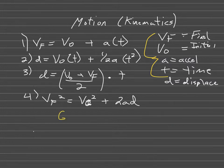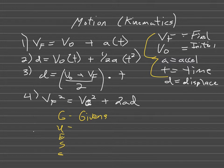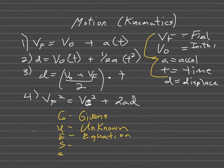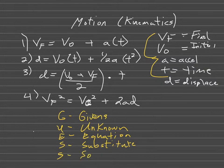For word problems we're going to use the GUESS method. G is for Givens — write down your givens. U is for Unknown — write down your unknown so you can see what equation you need. E is for Equation — write the equation you need. S is for Substitute, and the last S is for Solve.